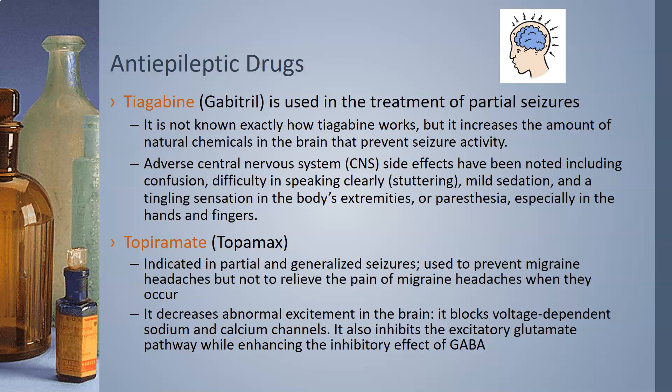Tiagabine, or Gabitril, is used in the treatment of partial seizures. It is not known exactly how tiagabine works, but it increases the amount of natural chemicals in the brain that prevent seizure activity. Adverse central nervous system side effects include confusion, difficulty speaking clearly, mild sedation, and a tingling sensation in the body's extremities — paresthesia — especially in the hands and fingers.